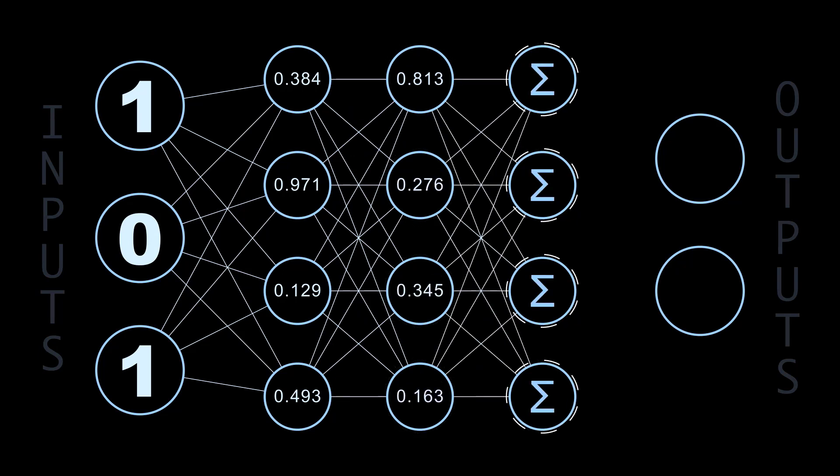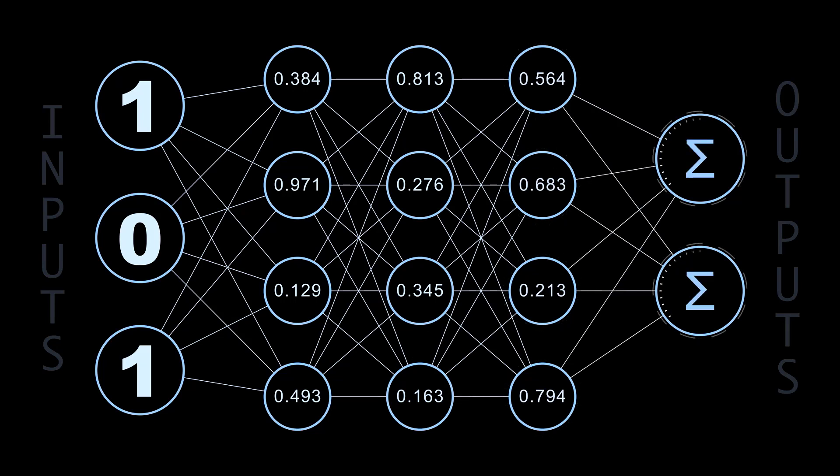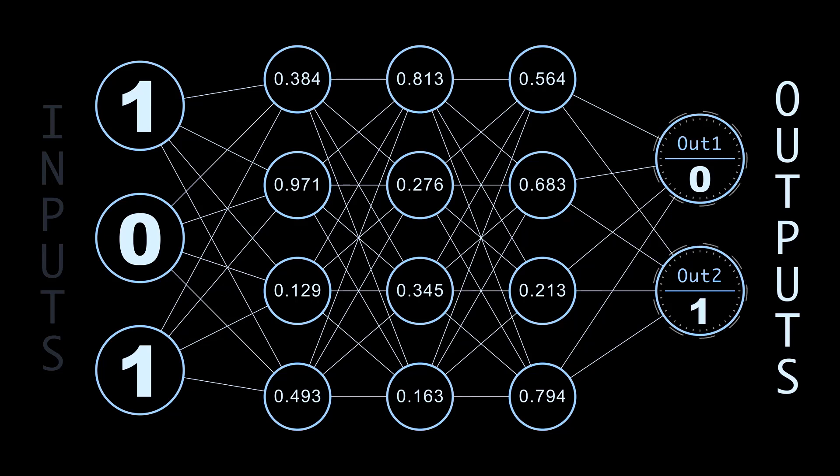These layers of neurons between the input and output layers are called hidden layers, and as long as you have more than one hidden layer, we can call this system deep learning. The deep in deep learning just refers to the depth of this network.